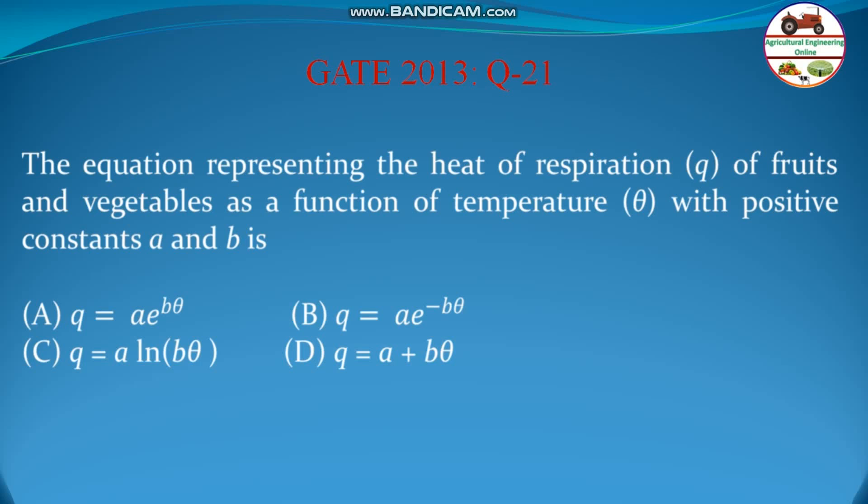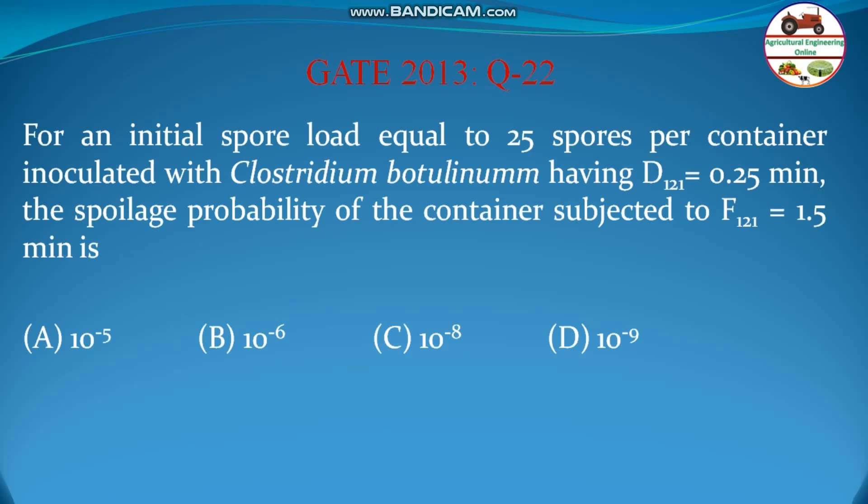Question 21: The equation representing the heat of respiration Q of fruits and vegetables as a function of temperature θ, with positive constants a and b, is: (a) Q = a·e^(bθ), (b) Q = a·e^(−bθ), (c) Q = a·ln(bθ), (d) Q = a + bθ. The correct answer is Q = a·e^(bθ). This is the standard respiration equation for fruits and vegetables.